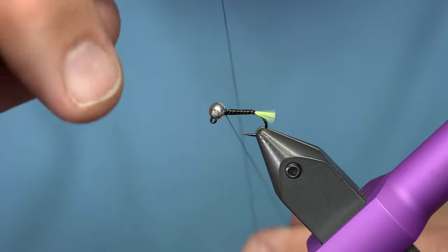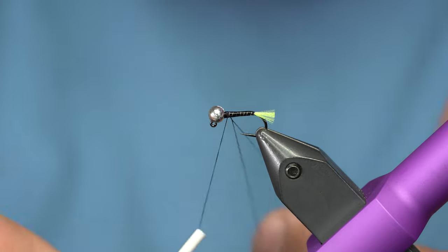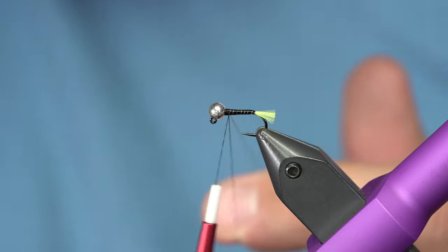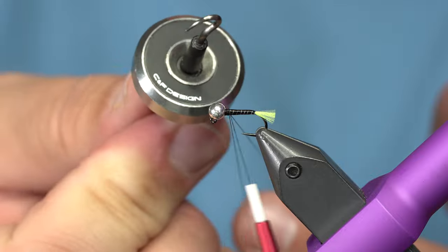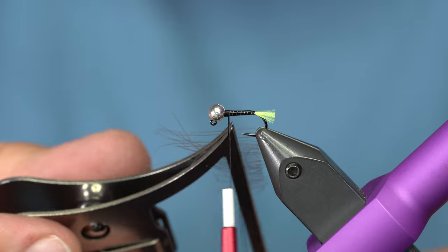So I'll just make a quick loop, close it off, and tie in the CDC. So with this loop, my favorite dubbing twister right now is this little CNF design top twister.